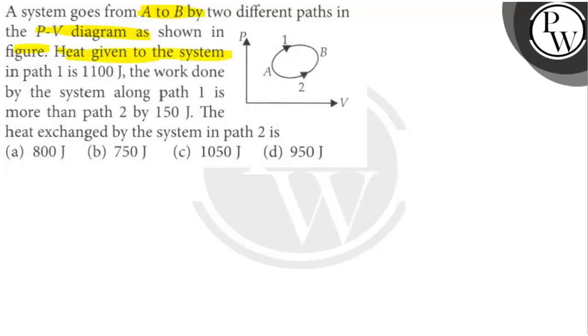Heat given to the system in path 1 is 1100 joules and the work done by the system along path 1 is more than path 2 by 150 joules. The heat exchanged by the system in path 2 is what we need to find.